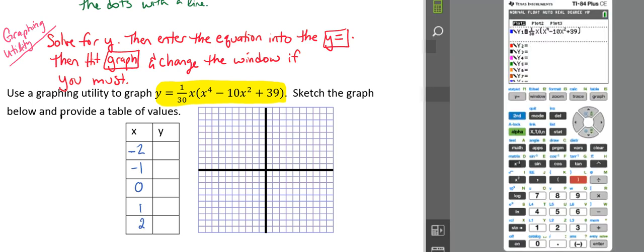So in our graphing utility, we want the table for that data. So we're going to go to look at our table. So we're going to hit second graph, because that brings up our table. And here we see that our values for negative 2 is negative 1, negative 1 is negative 1, 0 is 1, 1 is 1, and 2 is 1.